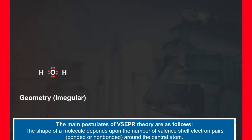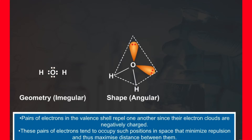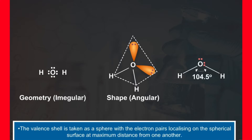The main postulates of VSEPR theory are as follows. The shape of a molecule depends upon the number of valence shell electron pairs — bonded or non-bonded — around the central atom. Pairs of electrons in the valence shell repel one another since their electron clouds are negatively charged. These pairs tend to occupy positions in space that minimize repulsion and thus maximize distance between them. The valence shell is taken as a sphere, with electron pairs localizing on the spherical surface at maximum distance from one another.